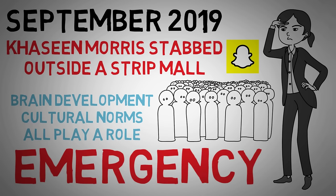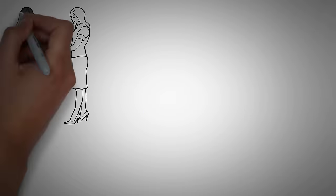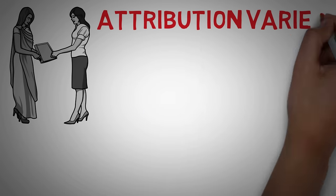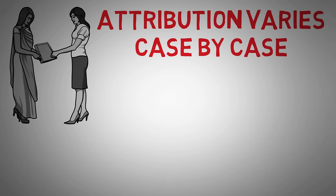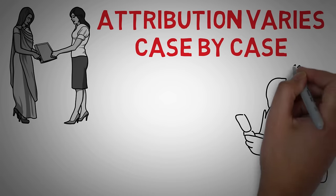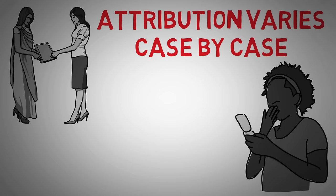Now there's a lot more research to be done on the bystander effect, and sometimes attribution varies case by case. But what we do know is that with stories like Kitty Genovese or Cassine Morris, they shock and often disgust the world.